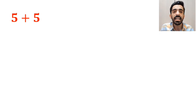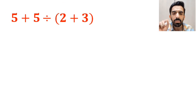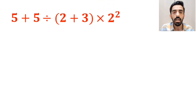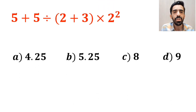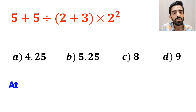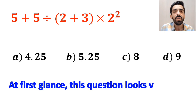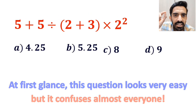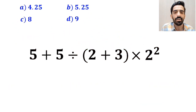What do you think is the value of the expression 5 plus 5 divided by open parenthesis 2 plus 3 close parenthesis, then times 2 to the power of 2? Which option do you think is the correct answer? At first glance, this question looks very easy, but it confuses almost everyone. Let's take a closer look and solve it together.